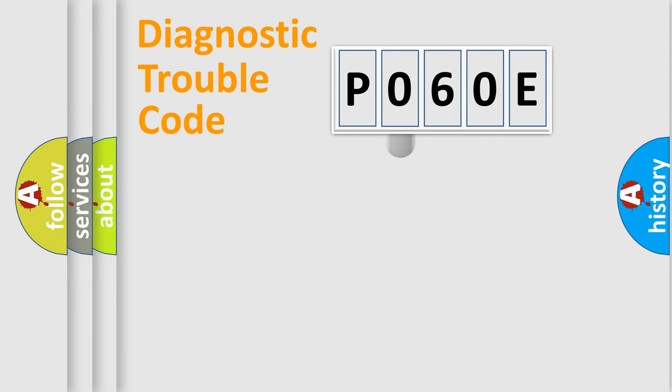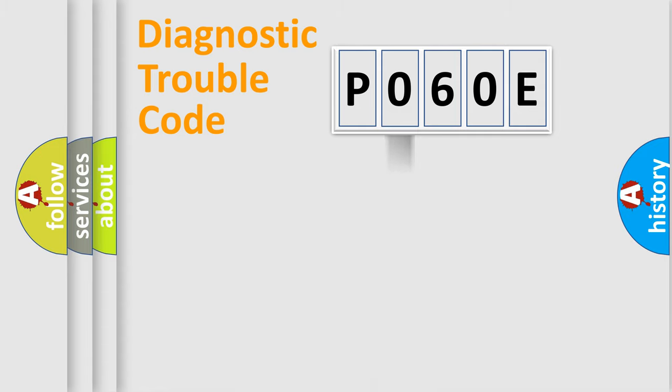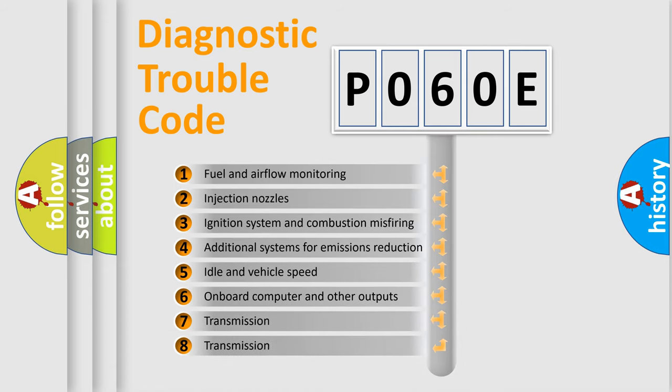This distribution is defined in the first character code. If the second character is expressed as zero, it is a standardized error. In the case of numbers 1, 2, or 3, it is a manufacturer-specific expression of the car error. The third character specifies a subset of errors.